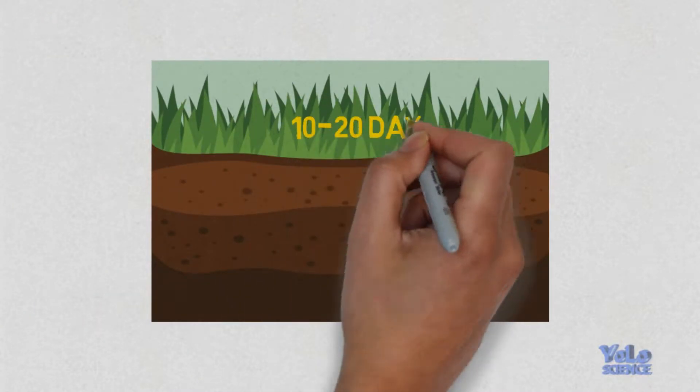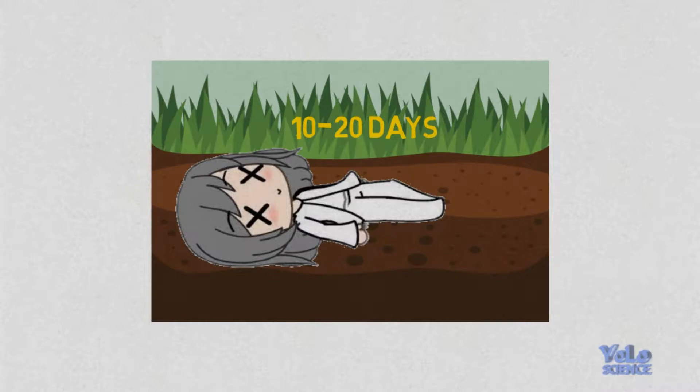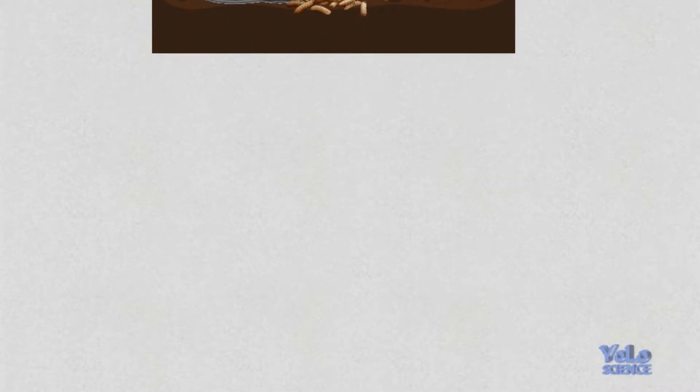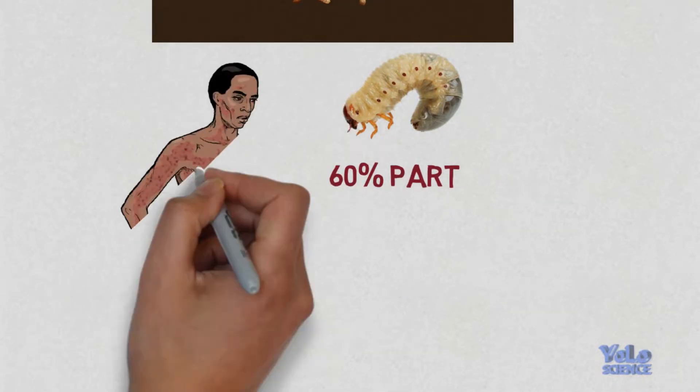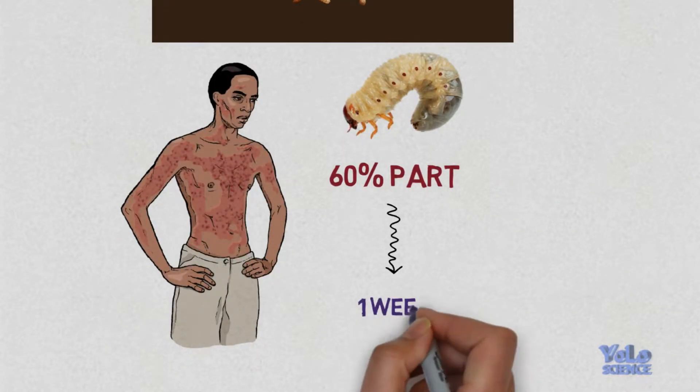And then, after 10 to 20 days, the insects present under the ground start eating the body. A worm called maggot can eat 60% of the dead body in only one week.